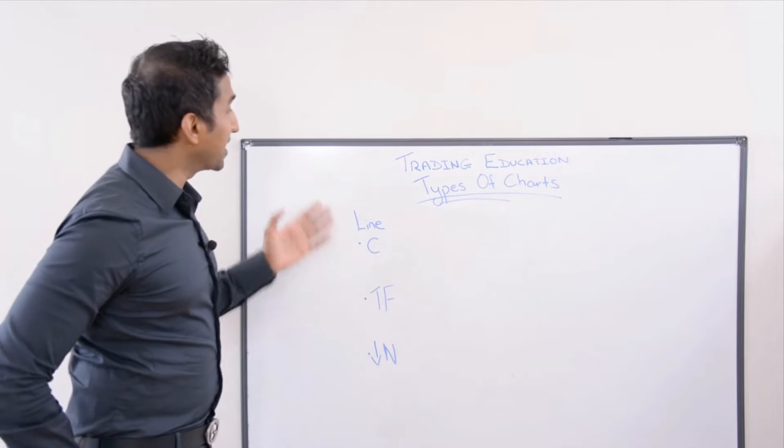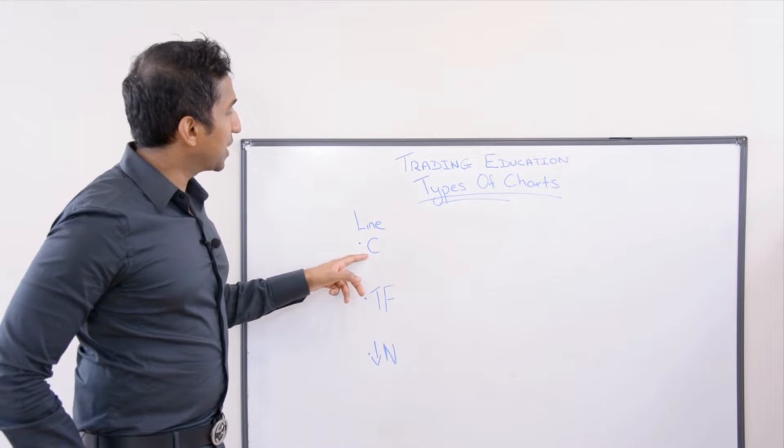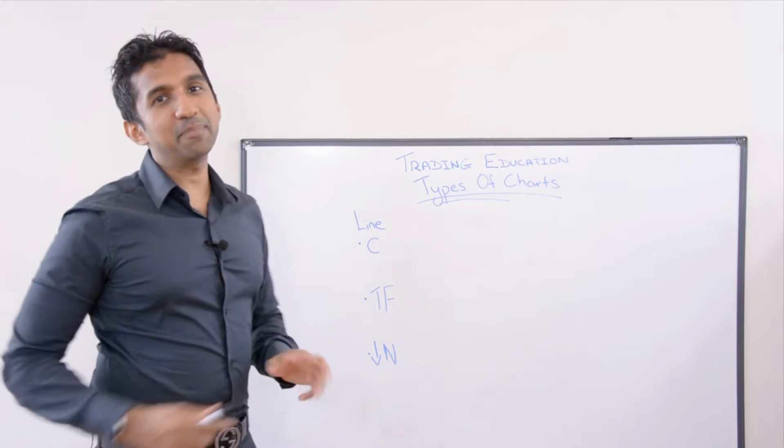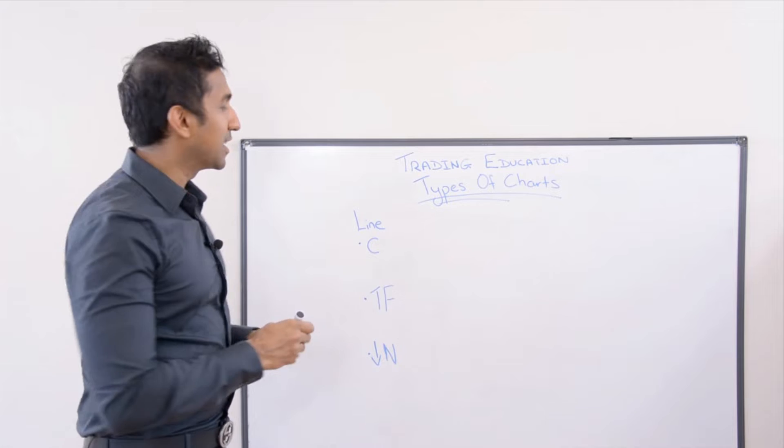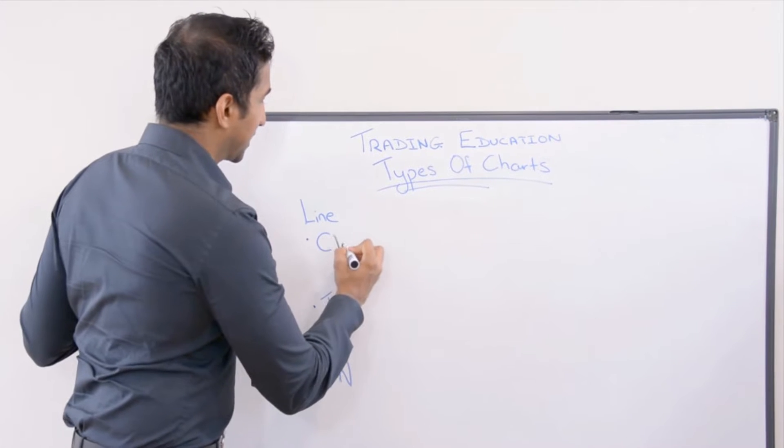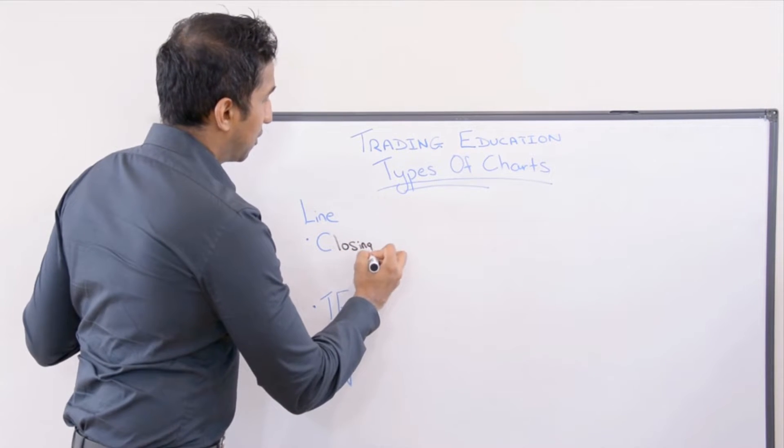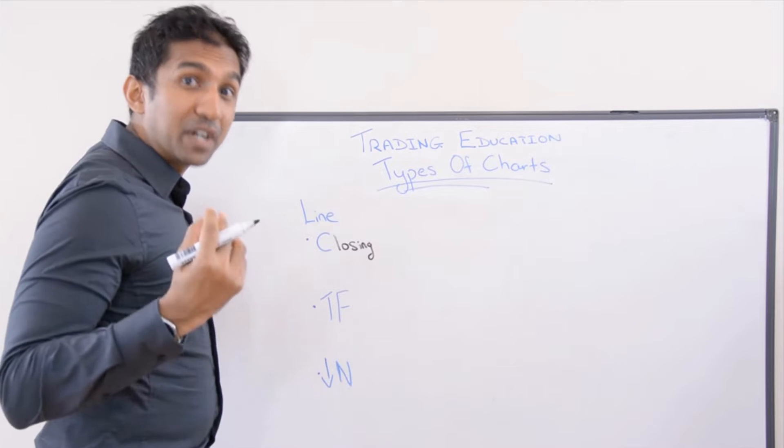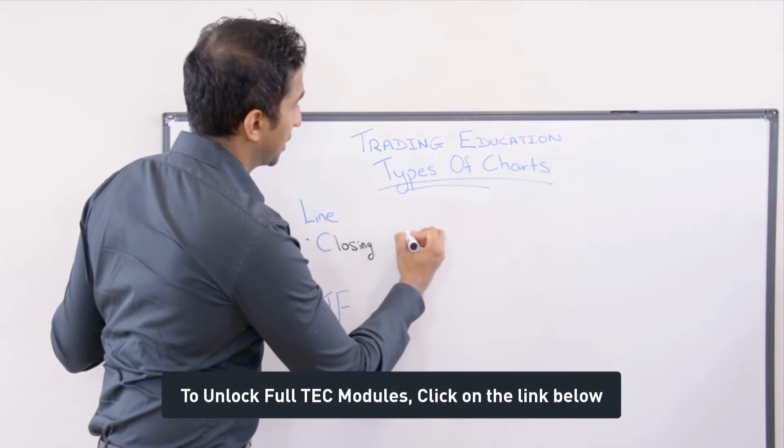Now, we move on to line charts. In line charts, what happens is that we join the closing prices. So therefore, we're not really having vertical bars at the moment. We just look at only closing prices.